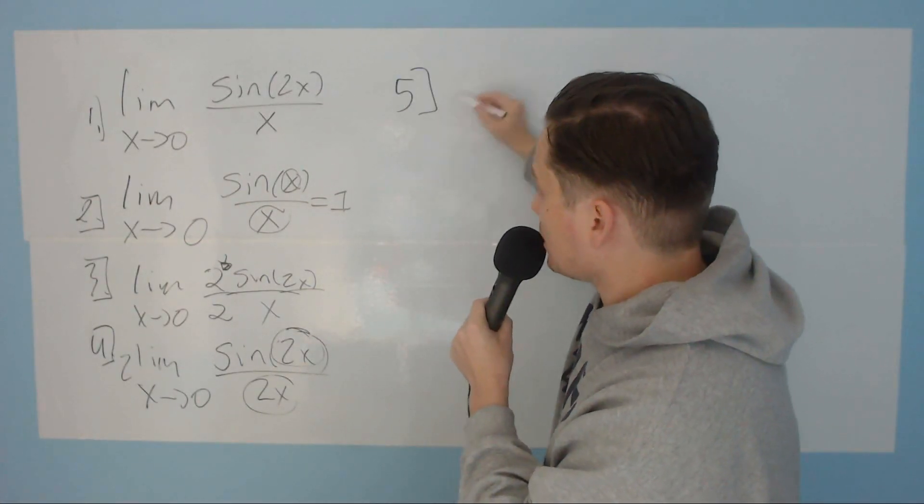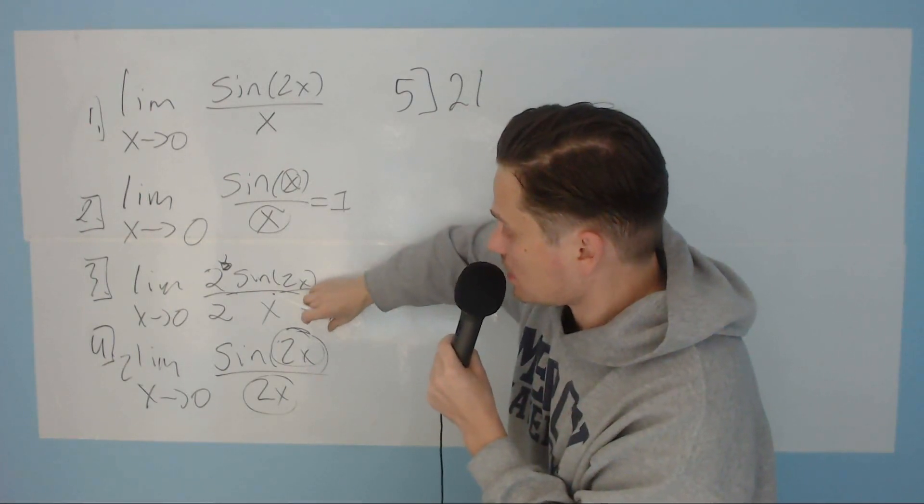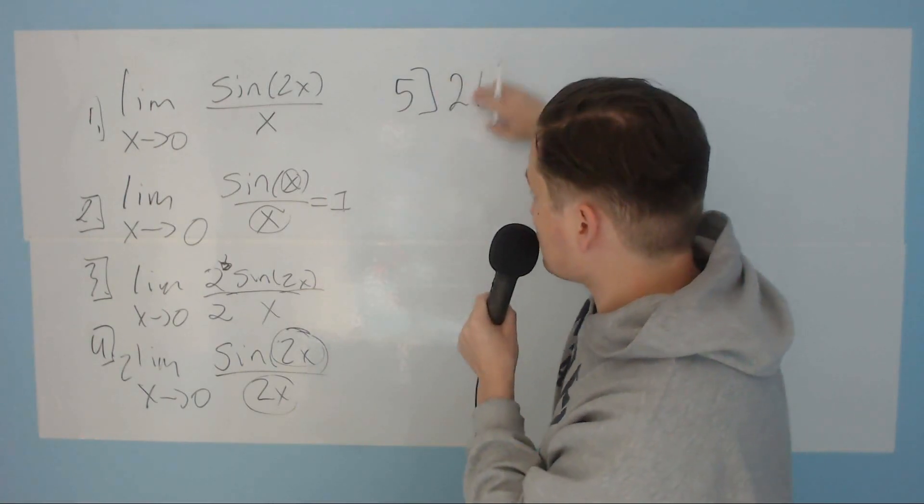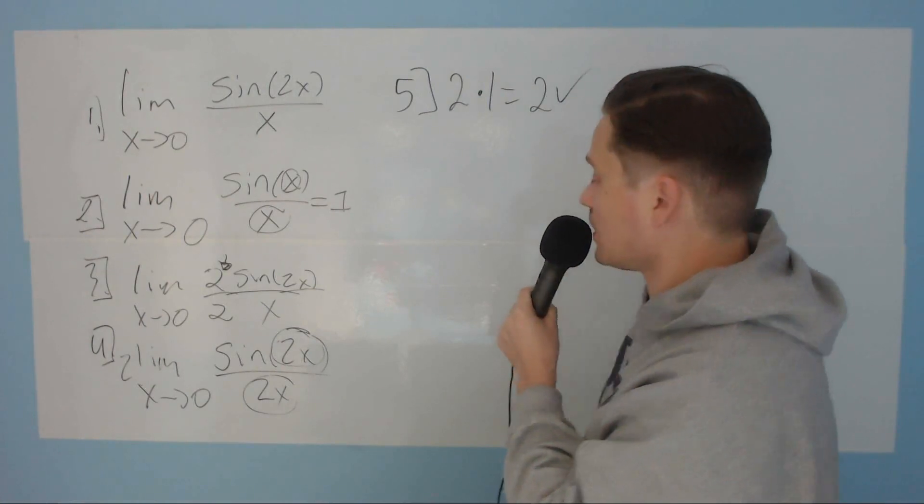I'm going to put here it's 2 times this limit right here. This limit is equal to 1. So in other words, I'm just going to put 2 times 1, which is 2. And that is the final answer.